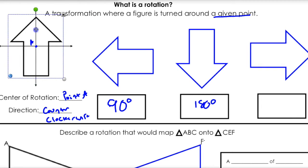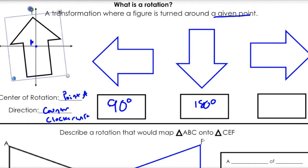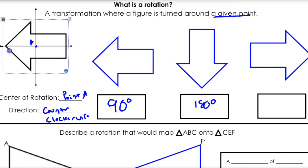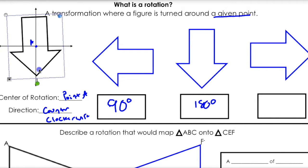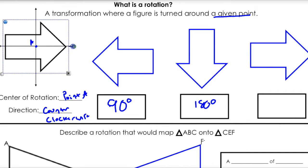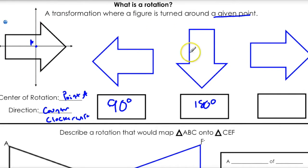We're going counter-clockwise. Now let's rotate it again — this time let's go three turns. That's 90, that's 180, and three — that is 270. So those are the main ones: 90, 180, and 270. Now 360 just ends up right back where it started.